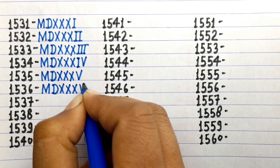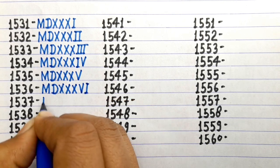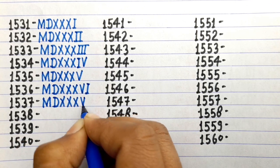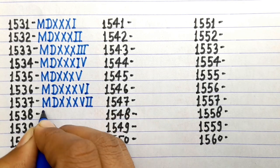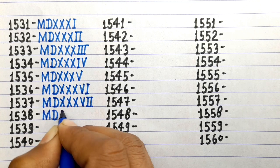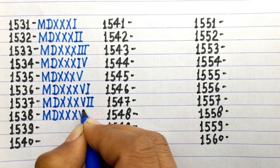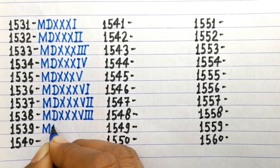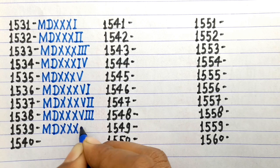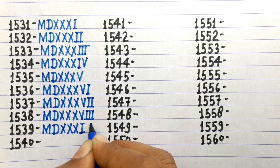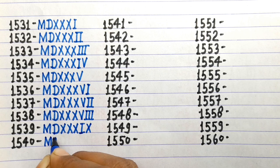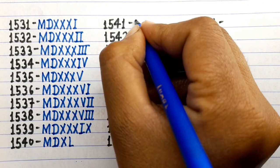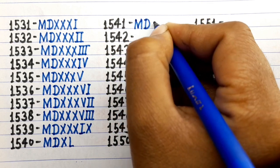1536 MDXXXVI, 1537 MDXXXVII, 1538 MDXXXVIII, 1539 MDXXXIX, 1540 MDXL, 1541 MDXLI.